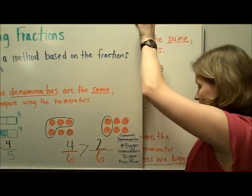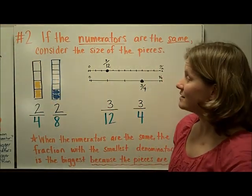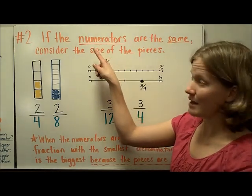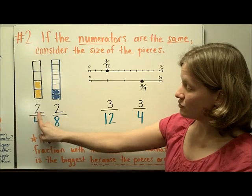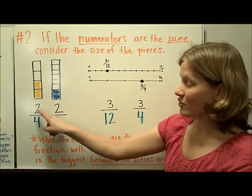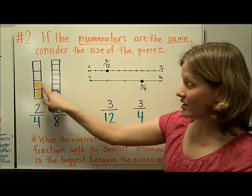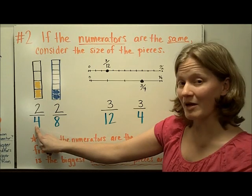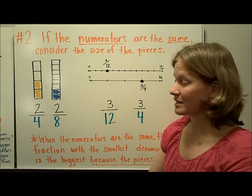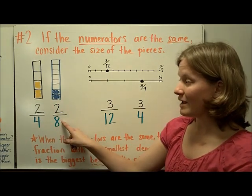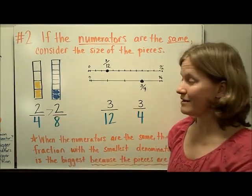The second way that you can compare fractions is if the numerators are the same, consider the size of the pieces. Here we have two-fourths and two-eighths. Both of these fraction towers have two pieces colored in. We can see from the fraction towers that the smaller denominator means bigger pieces. So two-fourths is going to be bigger than two-eighths, which are smaller pieces. So two-fourths is greater than two-eighths.